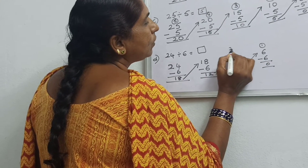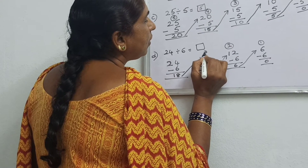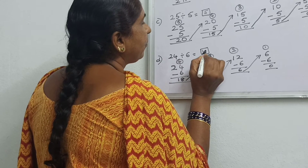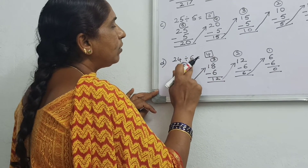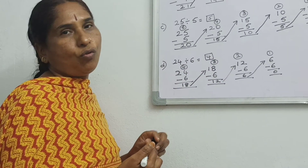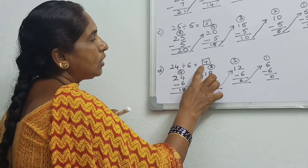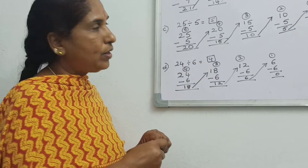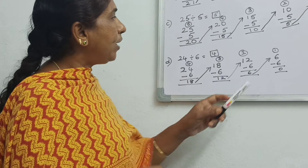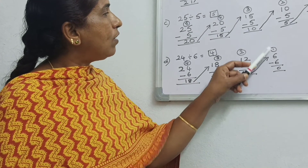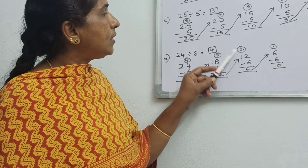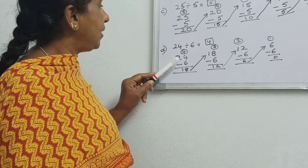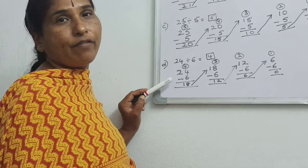So how many times did you subtract? 1 time, 2 times, 3 times, 4 times. So 24 divided by 6 is equal to 4. Six 4s are 24. Four 6s are 24. Here you can see the table: 6 ones are 6, 6 twos are 12, 6 threes are 18, 6 fours are 24.